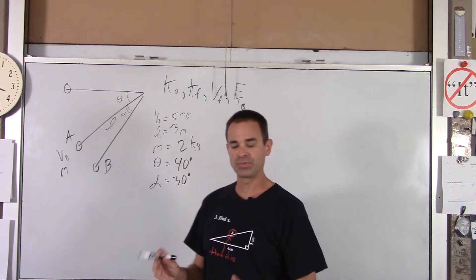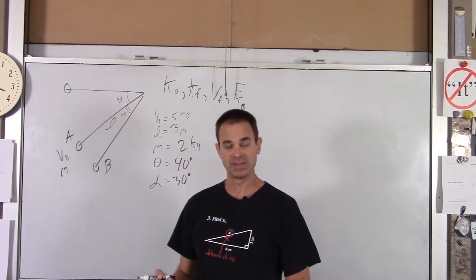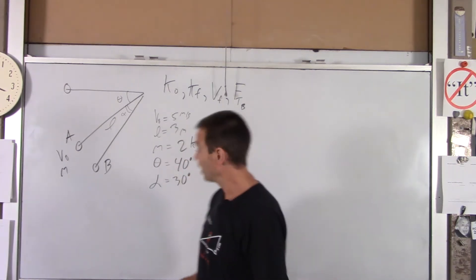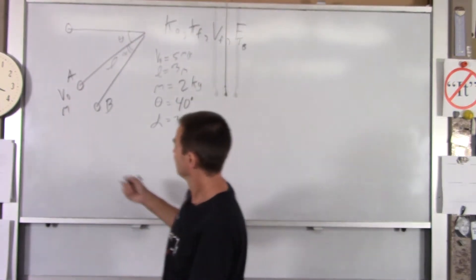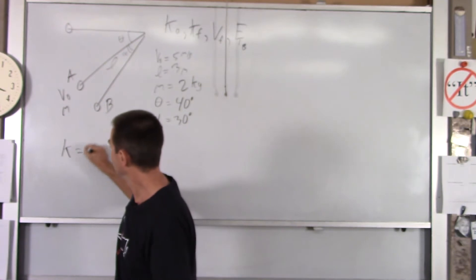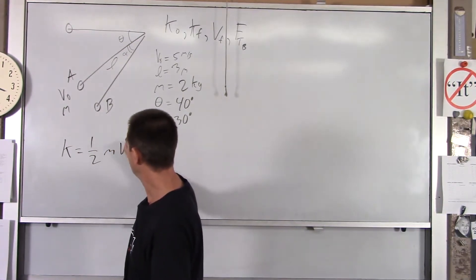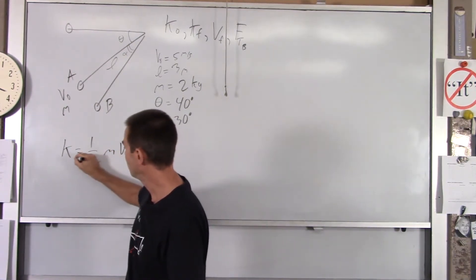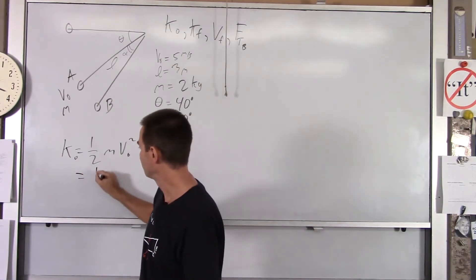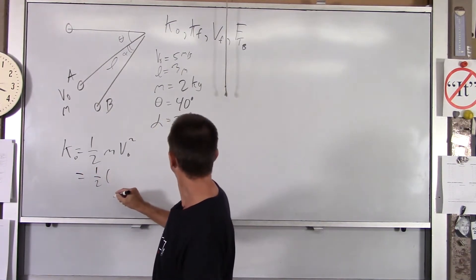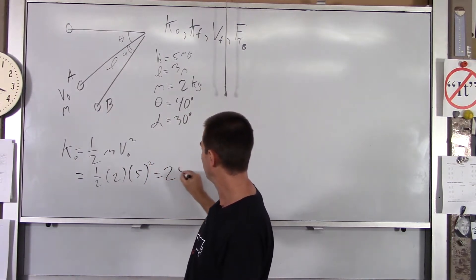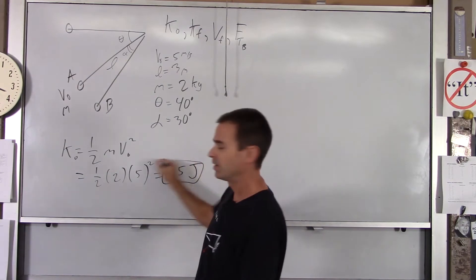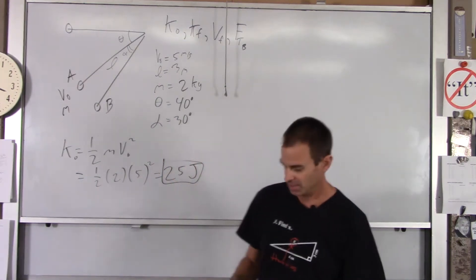Let's say theta is 40 degrees, and alpha is 30 degrees. All right, so we'll do what we can with variables, and then we'll throw numbers in at the end. Okay, so the initial kinetic energy. Well, that is really easy. Kinetic energy is one-half m V0 squared. That's our K0, and we have all those numbers. There's one-half, the mass is 2, and V is 5. And you square that, and you get 25 joules. No calculator necessary.